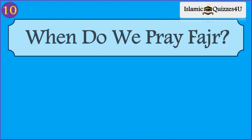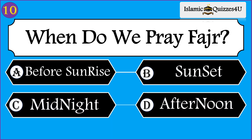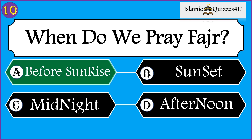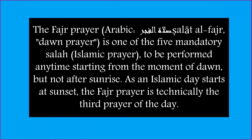Today's last question, question number ten: When do we pray Fajr prayer? Option A: before sunrise. Option B: sunset. Option C: midnight. Option D: afternoon. The correct option is before sunrise. The Fajr prayer — Arabic: Salat al-Fajr, the dawn prayer — is one of the five mandatory Salah, performed any time starting from the moment of dawn but not after sunrise. As an Islamic day starts at sunset, the Fajr prayer is technically the third prayer of the day.